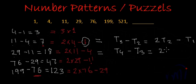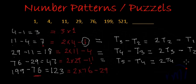We can write t5 minus t4, which is 76 minus 29, equals 2 times t4 minus t3. Similarly, t6 minus t5 equals 2 times t5 minus t4.